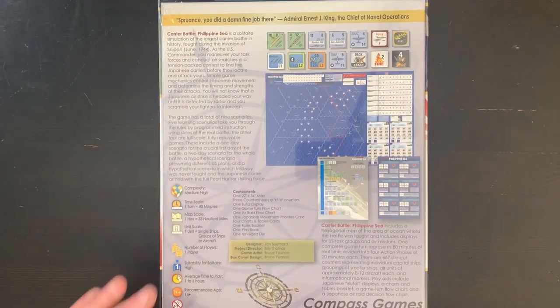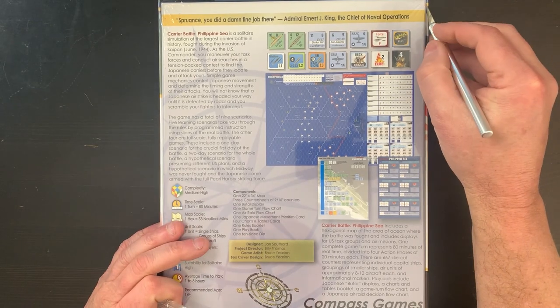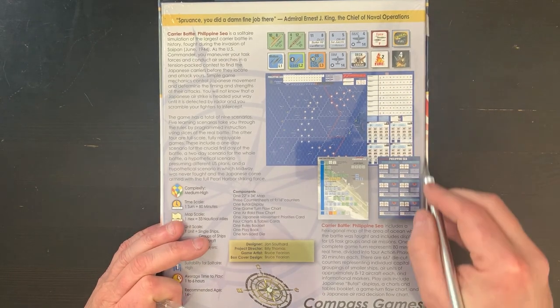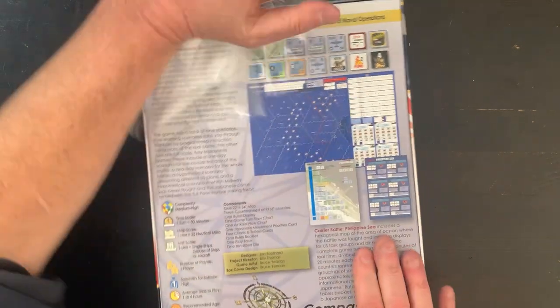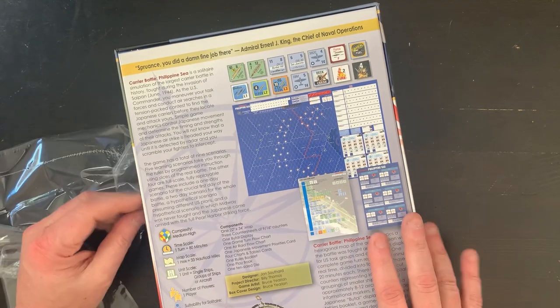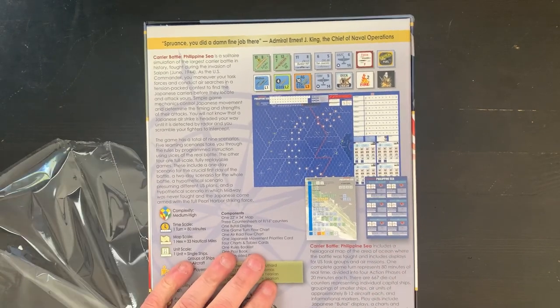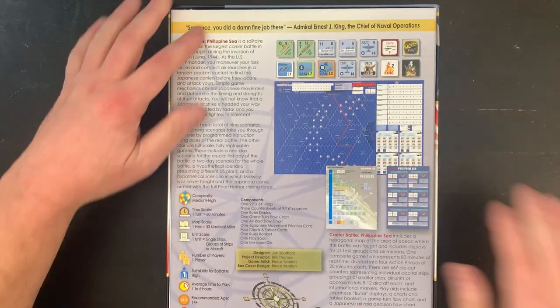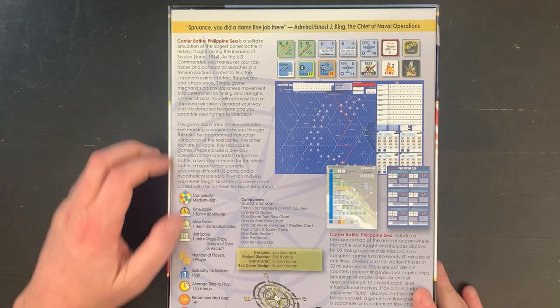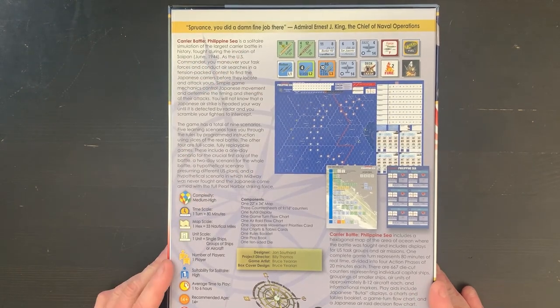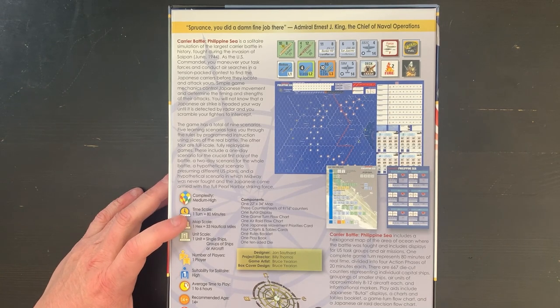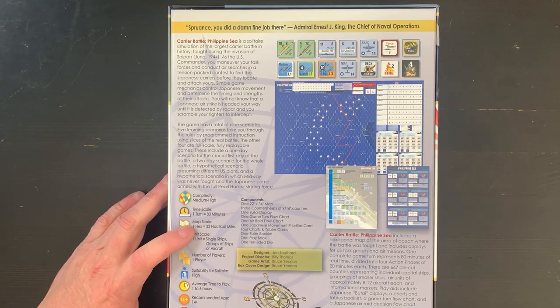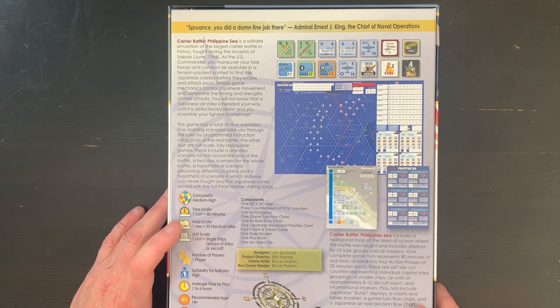Give me a second. This came in the mail just before lunch. I've been jumping to get my hands on this. What do we got here? It's a solitaire game. Complexity medium-high. Scale: one turn equals 80 minutes. One hex is approximately 33 nautical miles.